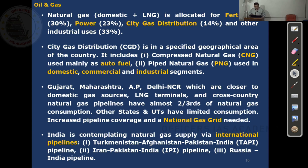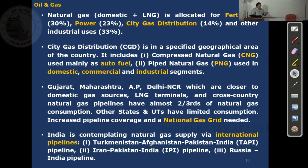India is contemplating natural gas supply via international pipelines: the TAPI pipeline — Turkmenistan, Afghanistan, Pakistan, India — the IPI pipeline — Iran, Pakistan, India — and a Russia-India pipeline. However, nothing has happened because these pipelines have to come through Pakistan or China, which are not exactly our friends. Coming through Pakistan would be cheaper, as would Turkmenistan via Afghanistan and Pakistan, but these proposals haven't taken off. The midstream story is essentially about the serious inadequacy in natural gas pipelines — oil pipelines are sufficient, but natural gas is insufficient.